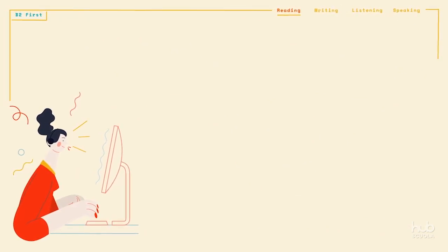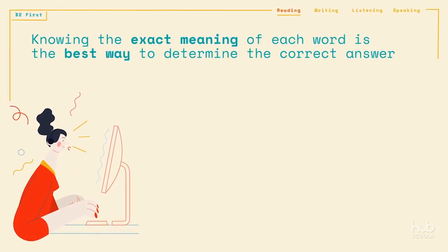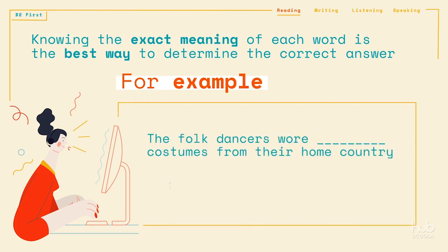Other times, knowing the exact meaning of each word is the best way to determine the correct answer. Sometimes a multiple choice item will contain similar, related words that have slightly different meanings. Understanding the specific meaning of each word and how the words differ will help you choose the correct answer. For example, all the answers — real, actual, authentic, and true — have similar meanings. But only the word "authentic" can also imply that something is traditional, which is why the correct answer is C.